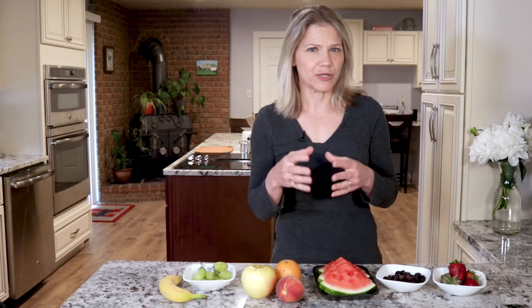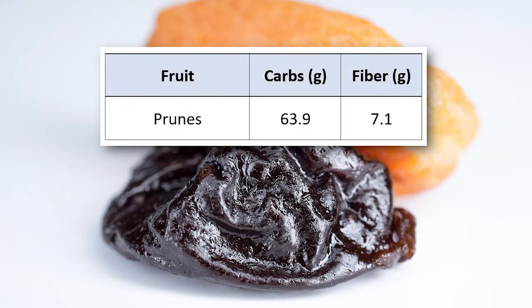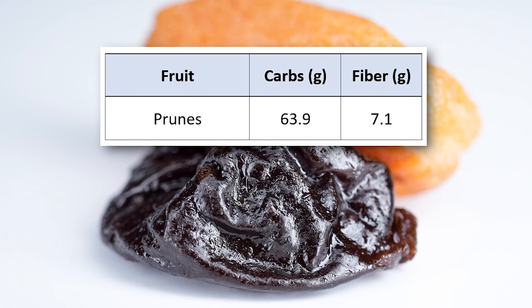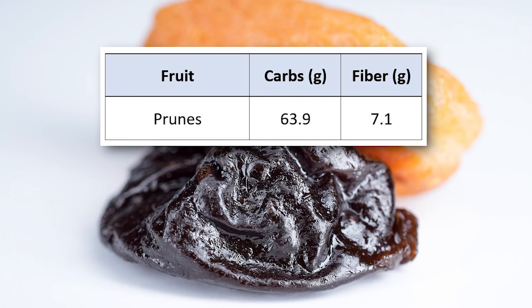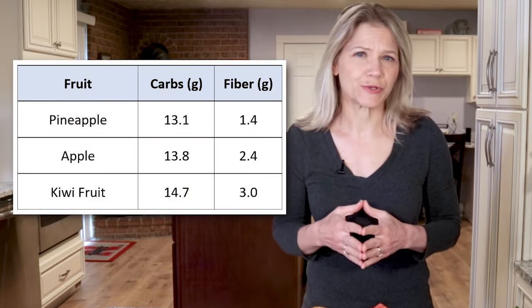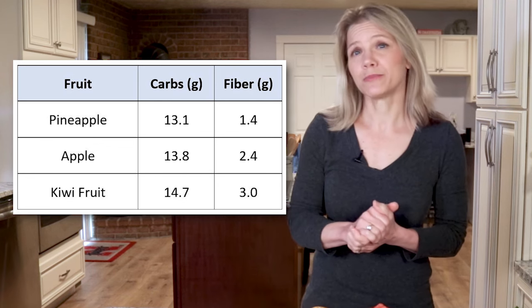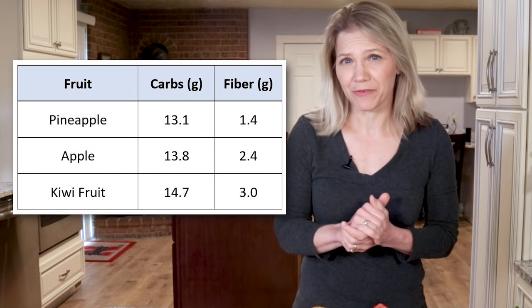However, if you dry that plum, it becomes a prune and it is no longer low-carb friendly. When the water content of the plum is removed, it concentrates the natural sugars in the fruit, causing the carb content of that same 3.5 ounce serving to skyrocket to almost 64 grams. In the middle of the carbohydrate rankings, we see fruits like pineapple, which has 13.1 grams of carbs, and kiwi, which is a little bit higher in carbs at 14.7 but also higher in fiber.